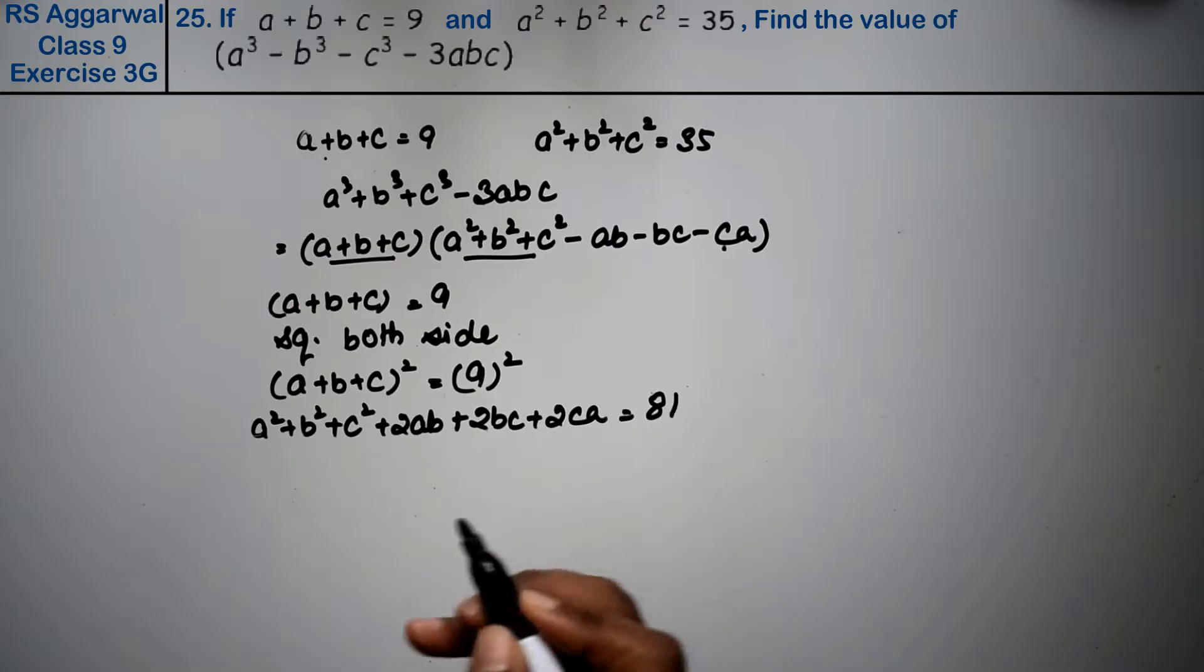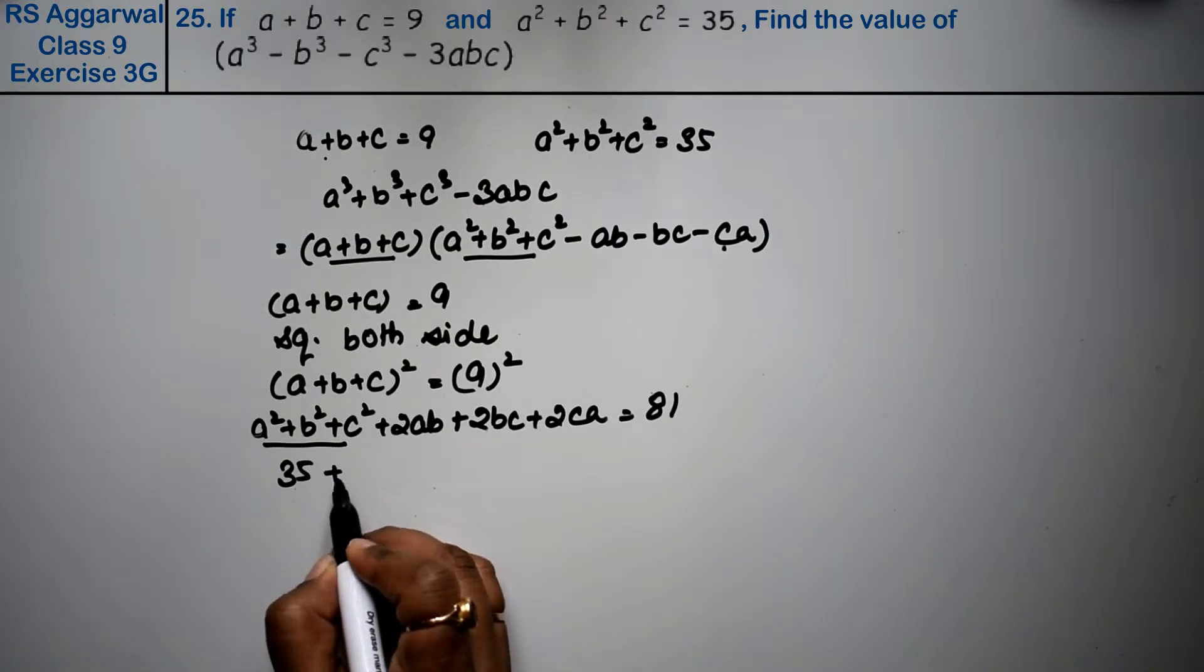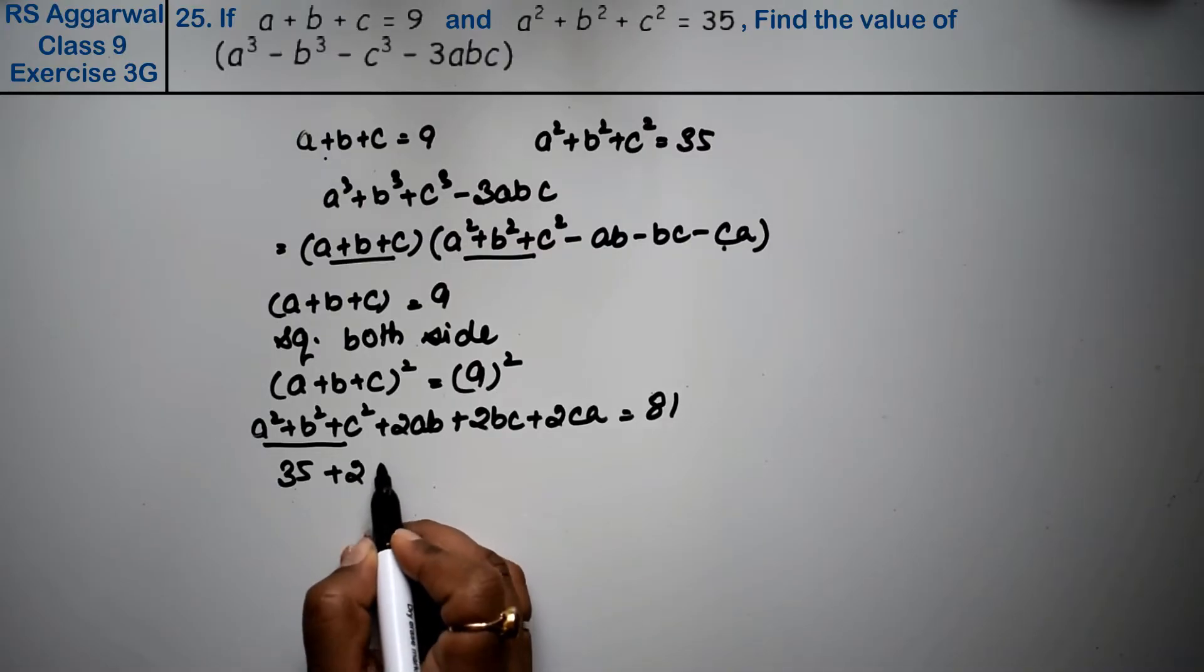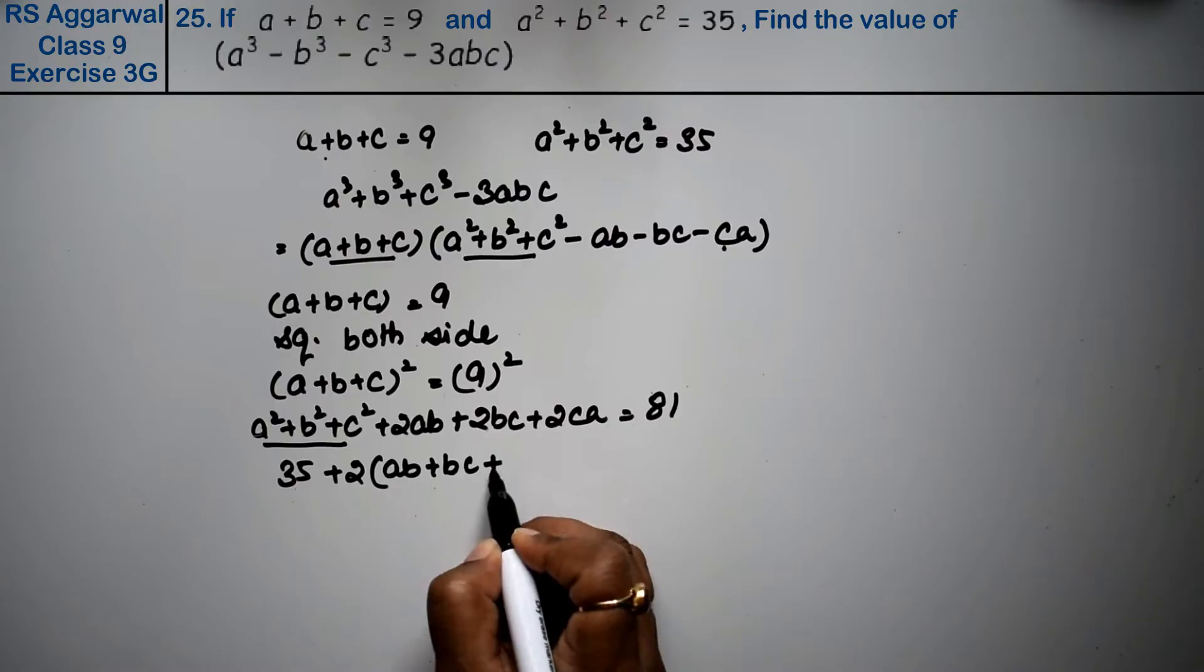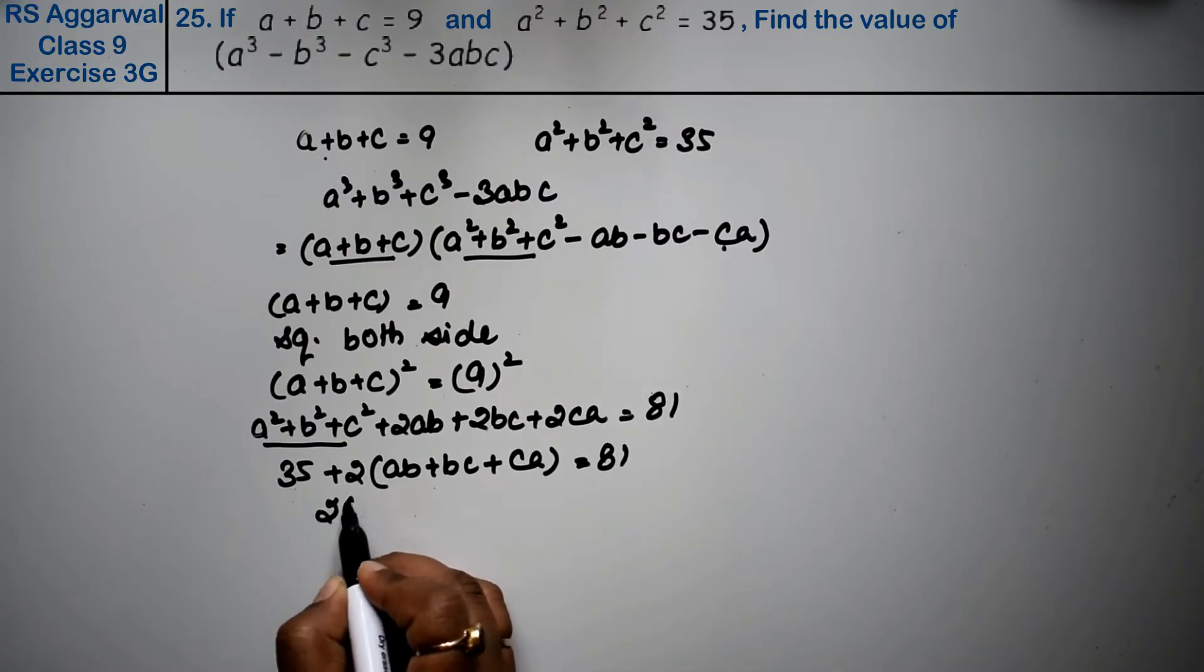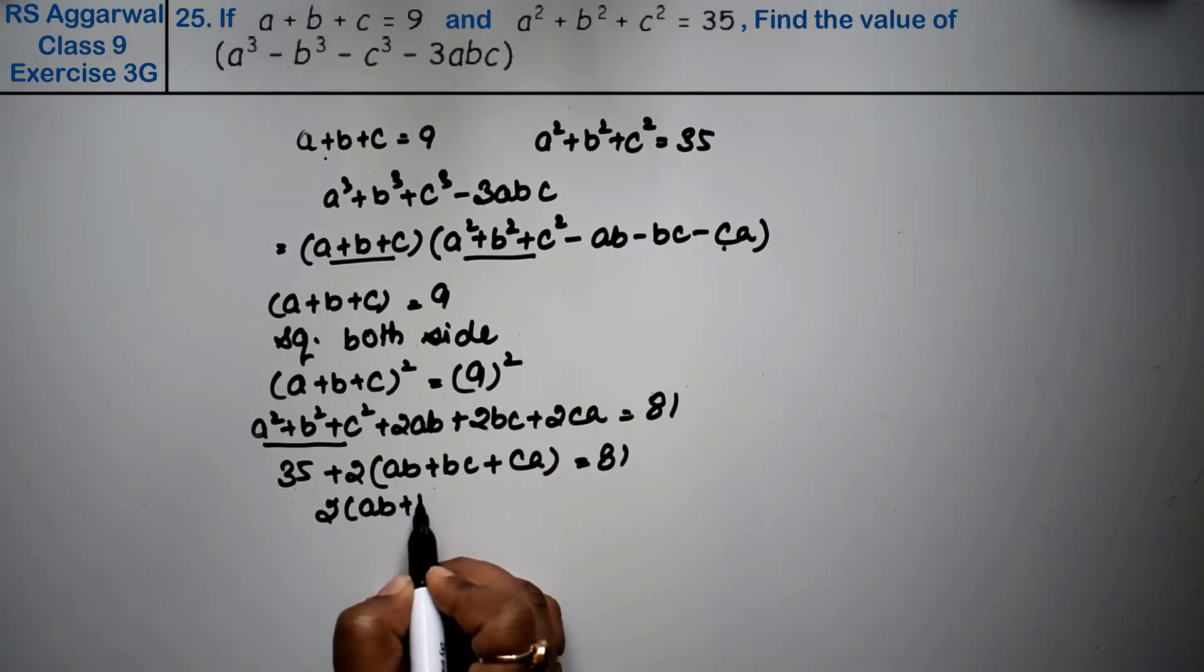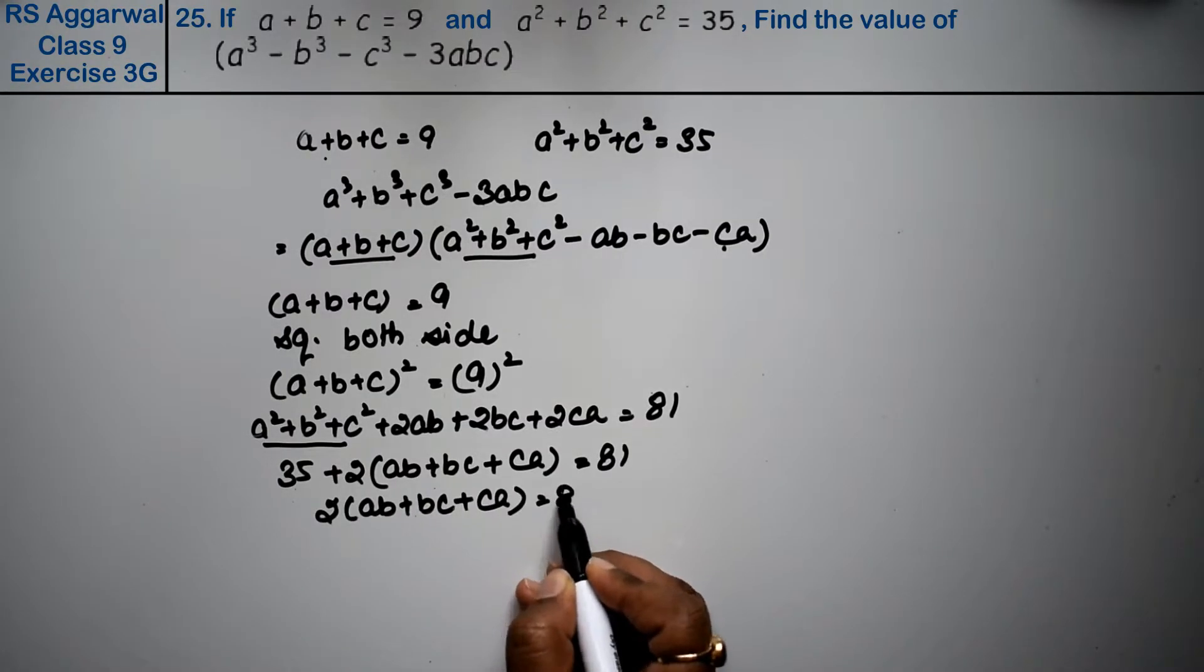Nine squared is 81. Now we know this value, a squared plus b squared plus c squared is 35. So 35 plus 2 times ab plus bc plus ca equals 81.